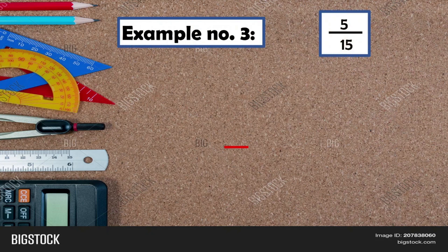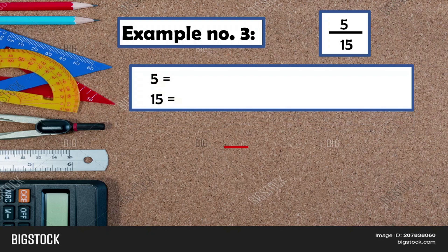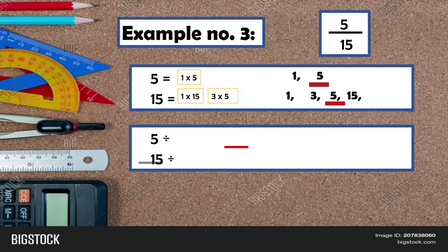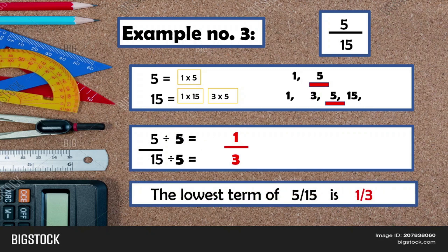Last example: find the lowest term of five over fifteen. Factors of five: one, five — since five is a prime number. Factors of fifteen: one, three, five, fifteen. The GCF is five. Divide: five divided by five equals one, and fifteen divided by five equals three. So the lowest term of five over fifteen is one-third.